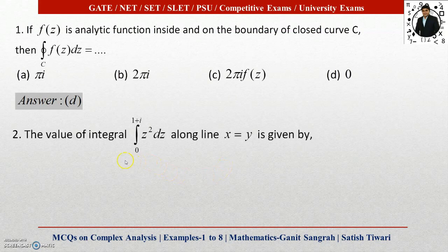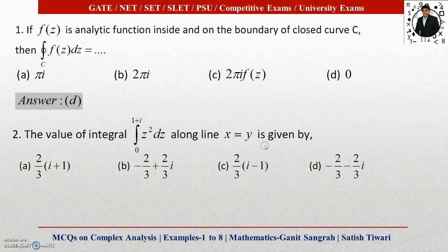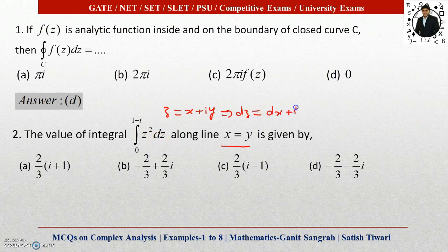Next, question two: the value of the integral from 0 to 1+i of z² dz, along the line x = y, is given by — you have four options. The condition x = y is given; we will use this to evaluate the integral. We know z = x + iy, so dz = dx + i dy. Since x = y, we also have dx = dy.